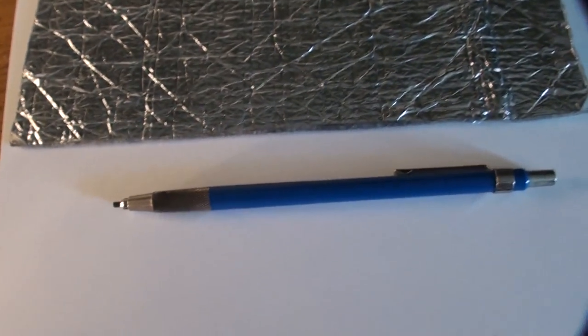Then the paper. This is Bristol vellum. I recommend using a thicker paper for this tutorial because we'll be indenting - basically pressing against the paper. If the paper's too thin, it'll rip through, so I recommend using a thicker paper.